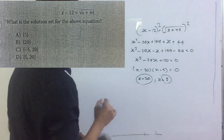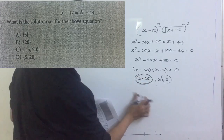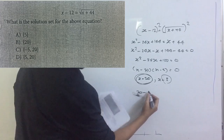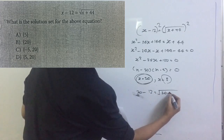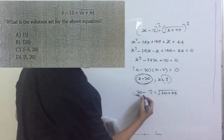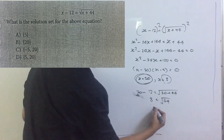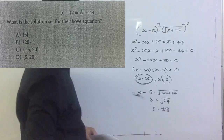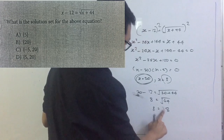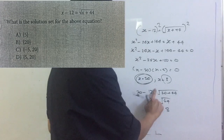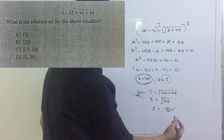When is it extraneous? In this case, let's check x equals 20. We'll see: 20 minus 12 equals the square root of 20 plus 44. So 20 minus 12 is 8, and the square root of 64 is 8. So 8 equals 8 — this is the correct solution.